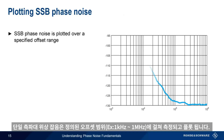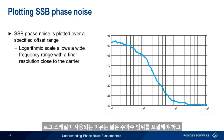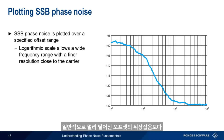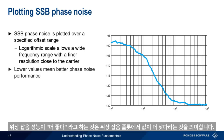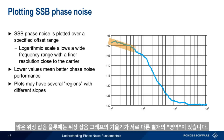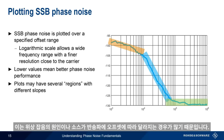Single sideband phase noise is measured and plotted over a defined offset range, in this case 1 kHz to 1 MHz. A logarithmic scale is used because it covers a wide frequency range but also has finer resolution close to the carrier. We're often more concerned with close-in phase noise than phase noise at larger offsets. Since phase noise is undesirable, lower values in our phase noise plot mean better phase noise performance. Note that many phase noise plots have distinct regions in which the phase noise graph has different slopes, due to the fact that the causes or sources of phase noise are often different at different offsets from the carrier.